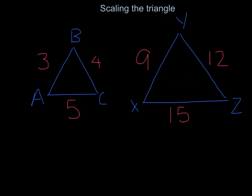Here we have triangle ABC with lengths 3, 4, 5, and triangle XYZ with lengths 9, 12, and 15. It's easy to see the relationship is that each side is 3 times larger or 3 times smaller than its corresponding triangle.